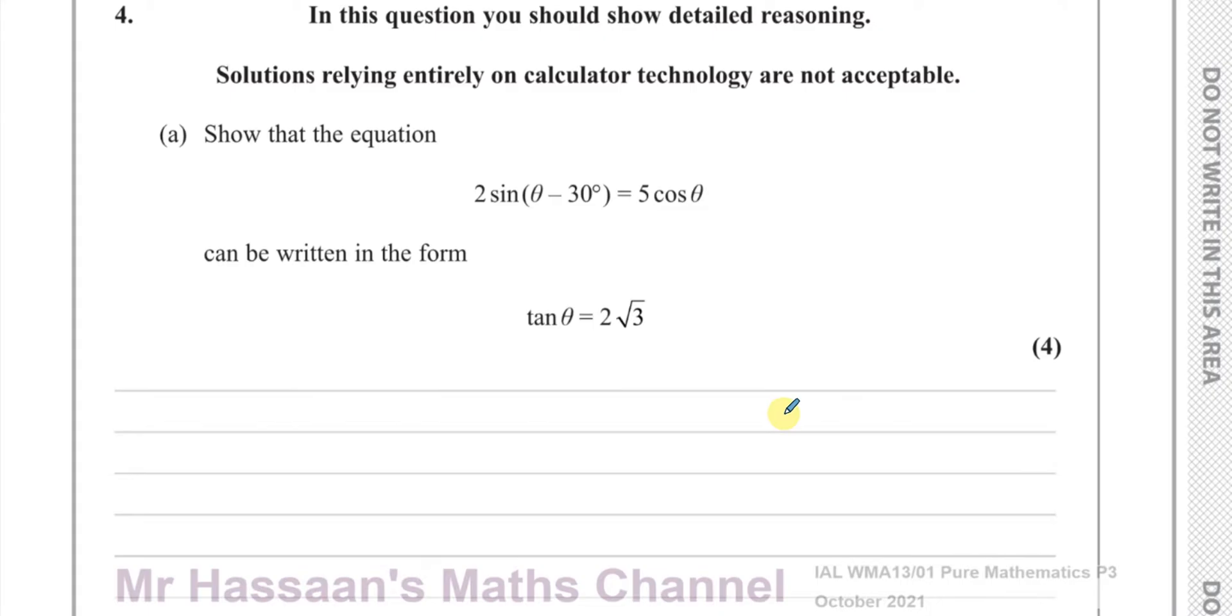For this question, it seems like we need to use the identities for what I call the compound angle formula, or sometimes known as addition formula. We need the one for sine. So you've got sin(A ± B) is identical to sinA·cosB ± cosA·sinB.